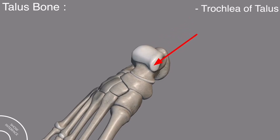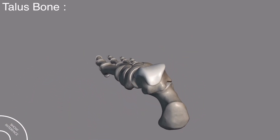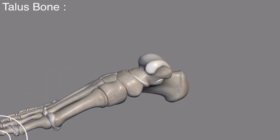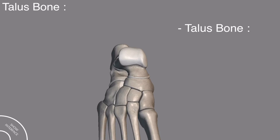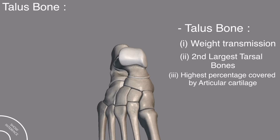The trochlea of the talus is a convex articular surface for articulation with the tibia and fibula. In the body of the talus, there are two tubercles: the medial tubercle and the lateral tubercle. The talus bone transmits the weight of the entire body from the lower legs to the foot. It is the second largest of the tarsal bones, one of the bones with the highest percentage of surface area covered by articular cartilage, and no muscle is attached to the talus bone.